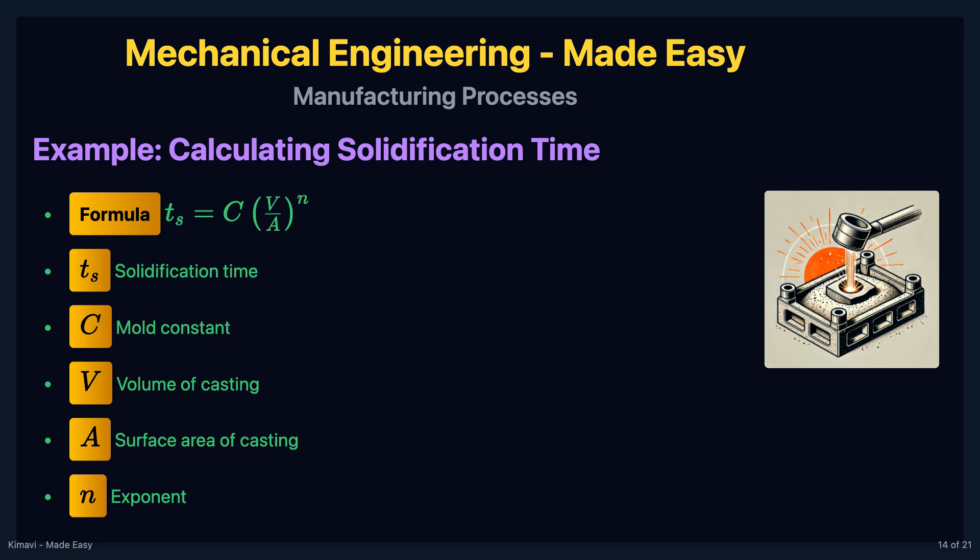For example, if a casting has a volume of 100 cubic centimeters, a surface area of 50 square centimeters, a mold constant of 0.2, and an exponent of 2, the solidification time would be 0.8 minutes.